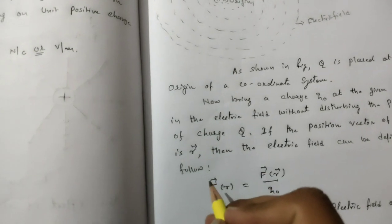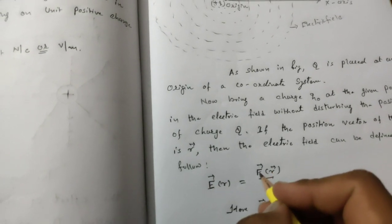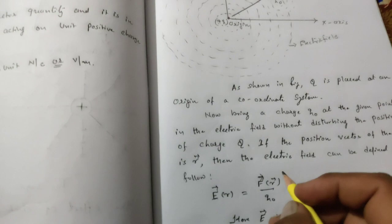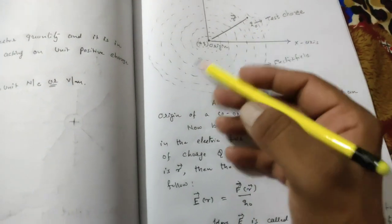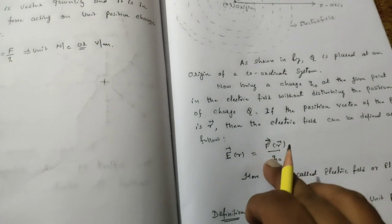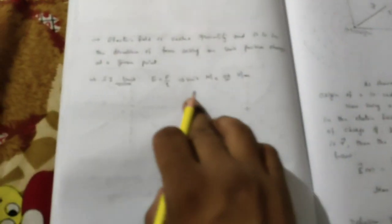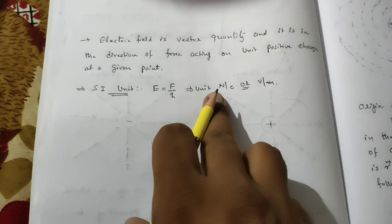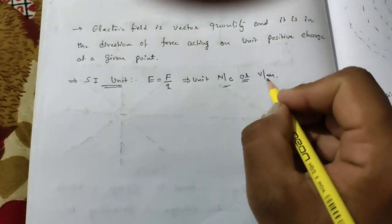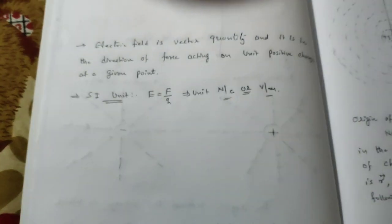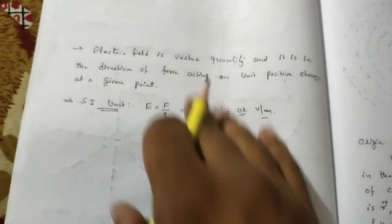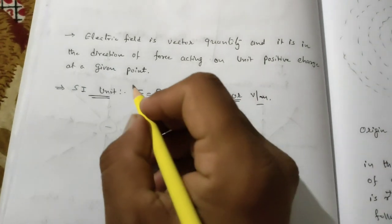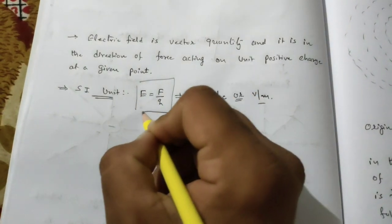Remember: electric field is a vector quantity, so an arrow overhead is important. Similarly, force is also a vector quantity, so we put an arrow overhead. r indicates the position vector of q0. The SI unit of electric field is force per unit charge — that is Newton per Coulomb — or you can also use Volt per meter. Using this equation, you can easily find the electric field intensity in any case.